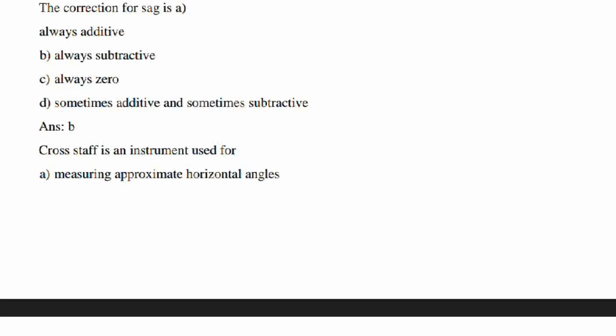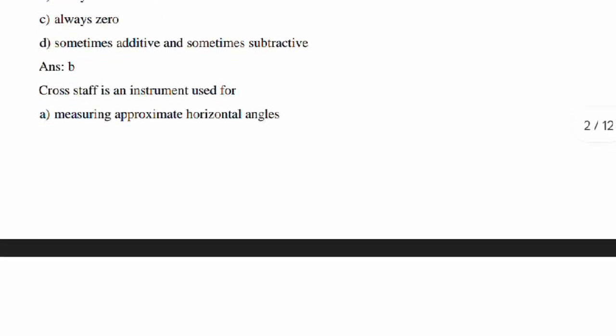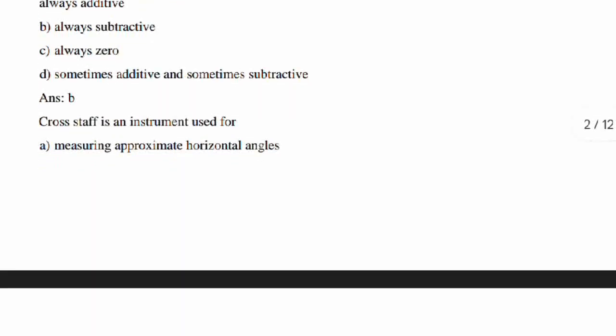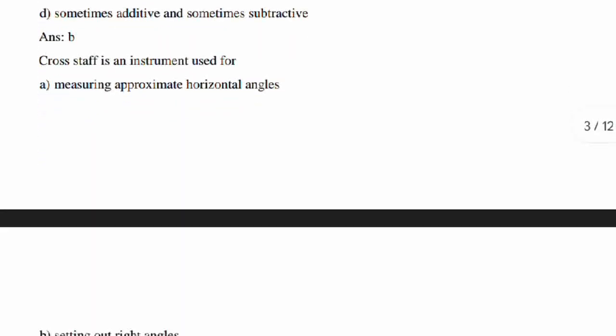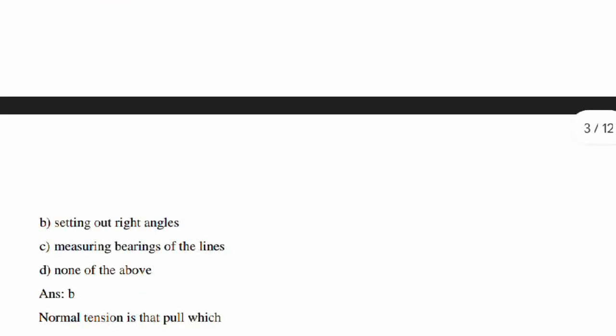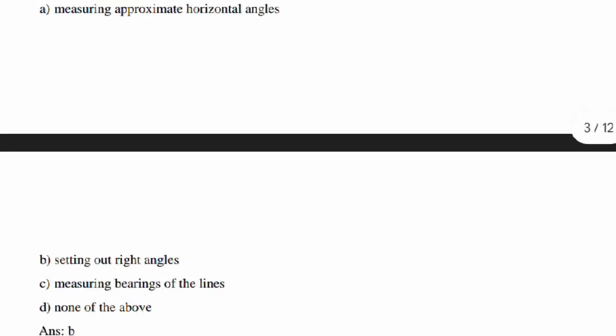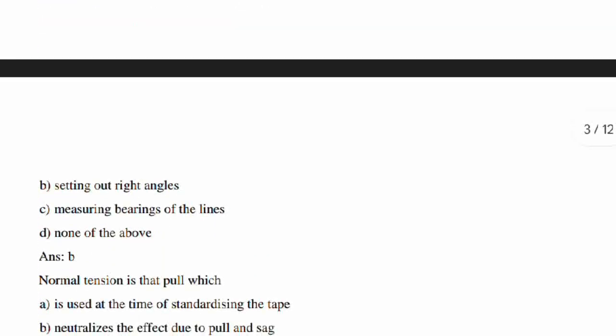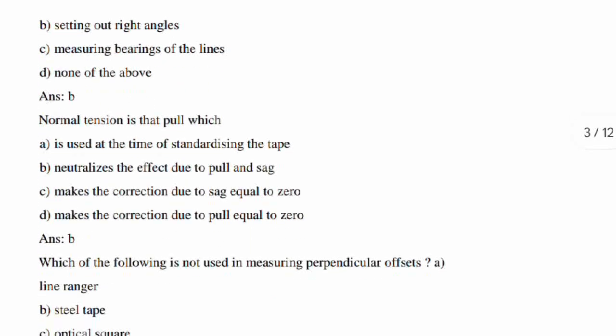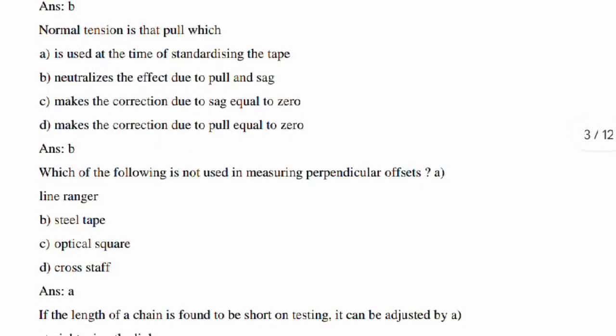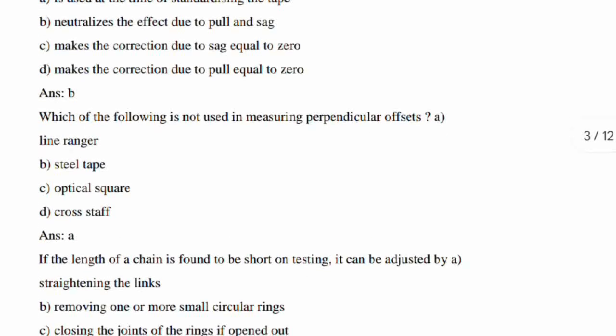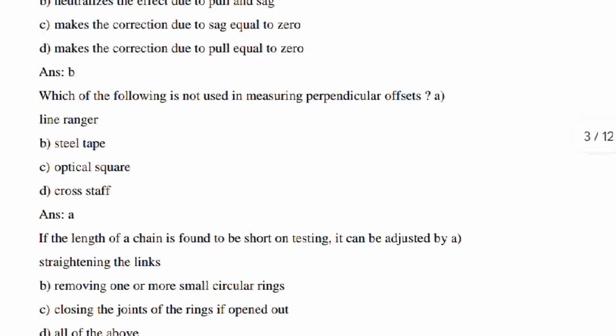The correction for sag is always subtractive. Cross staff is an instrument used for setting out right angles. Normal tension is that pull which neutralizes the effect due to pull and sag.